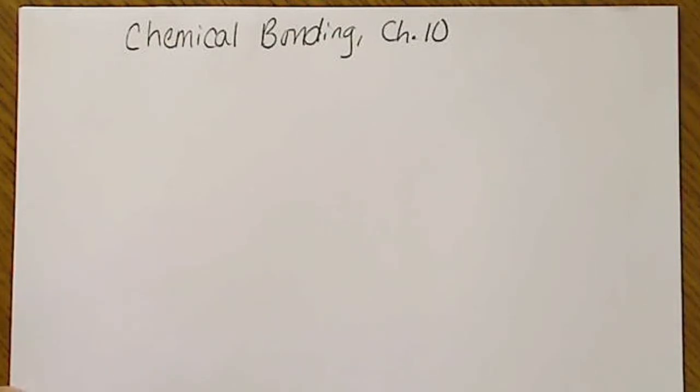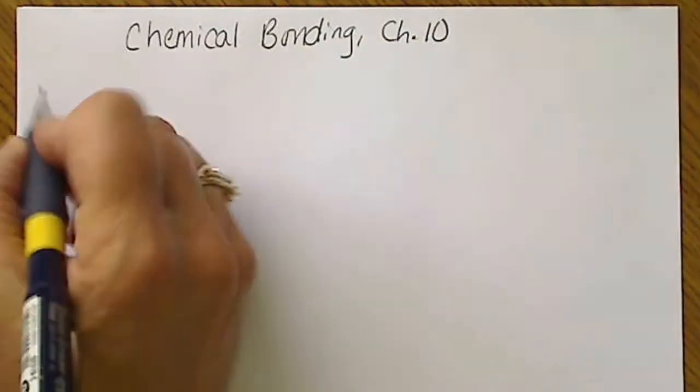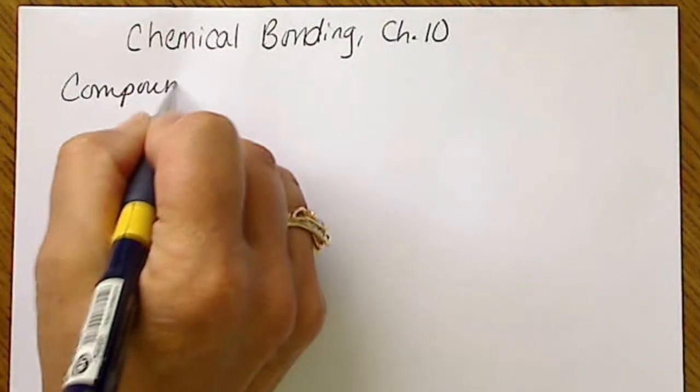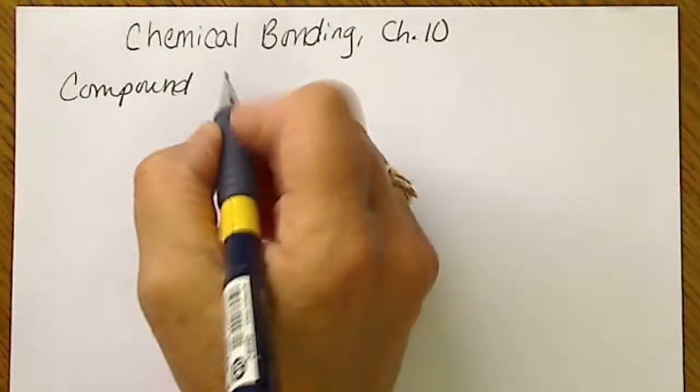Before we start talking about chemical bonding, we need to make a clear distinction between two types of compounds. So remember a compound has two different types of elements.